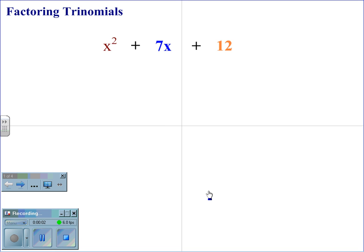Factoring Trinomials. x squared plus 7x plus 12 is a trinomial. The a term is the 1 in front of the x squared, the b term is 7 in front of the x, and the c term is 12.